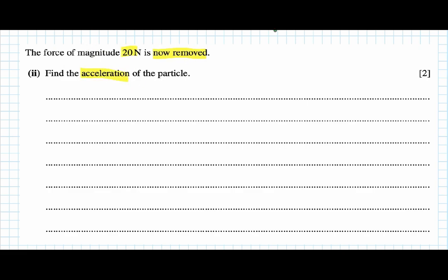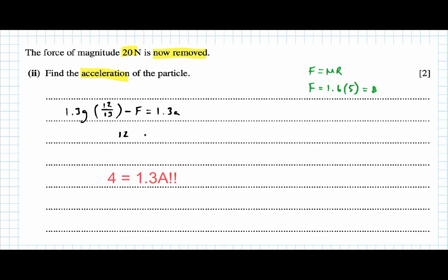In part two, the 20 N force is removed, so the particle moves down the slope. The sine component minus friction force equals ma: 12 − 8 = 1.3a, so 4 = 1.3a, giving acceleration a = 3.08 meters per second squared.